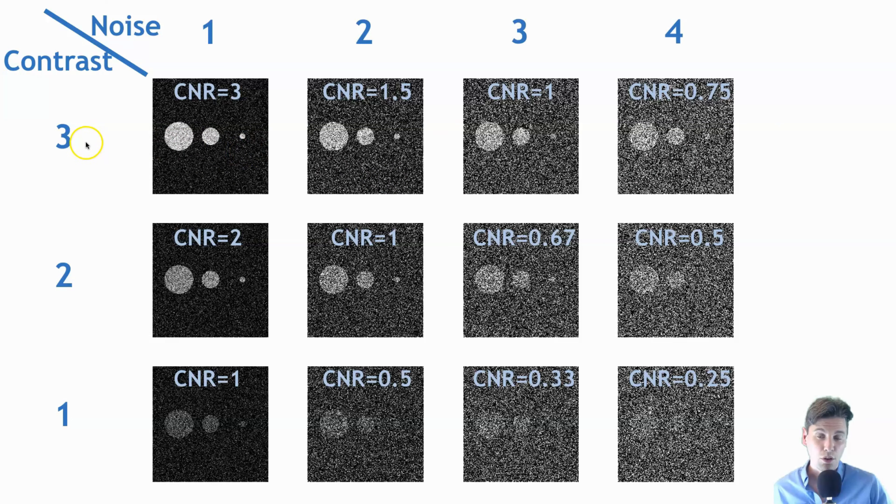So the contrast to noise ratio, then we go to lower contrast. So that's the contrast of three. We go to a contrast of two, and then we do the same thing where we go across. Now it's basically impossible to visualize that small object in the noisy background when we go to our lowest contrast noise level.